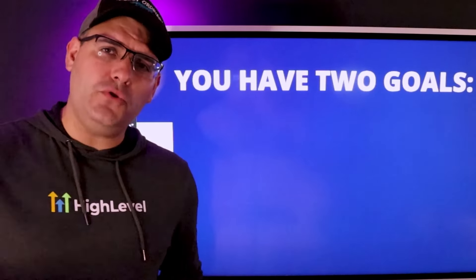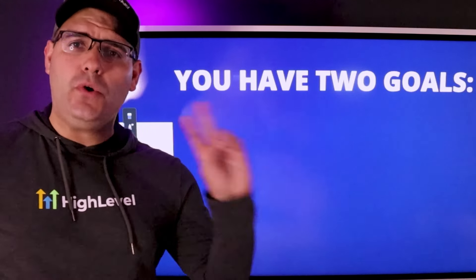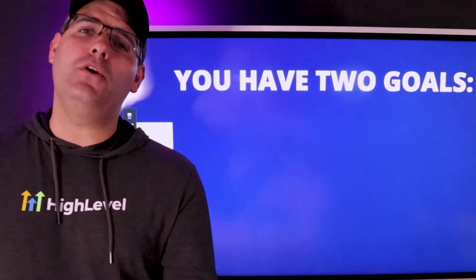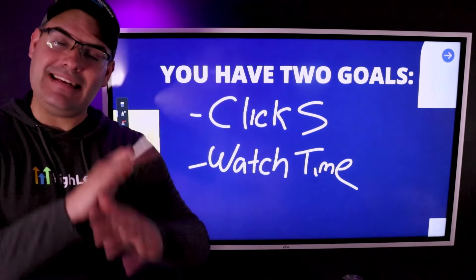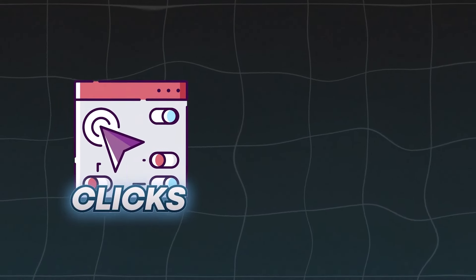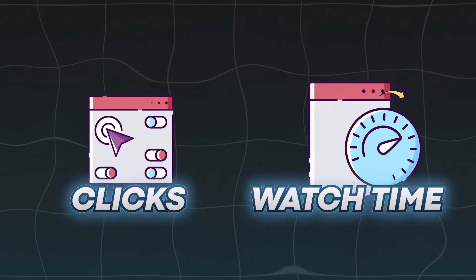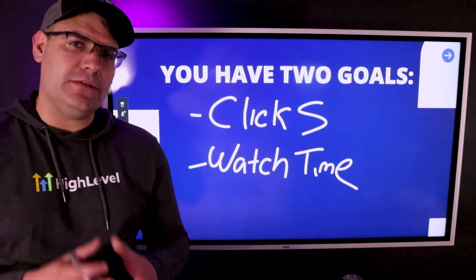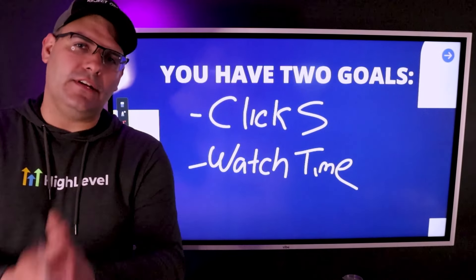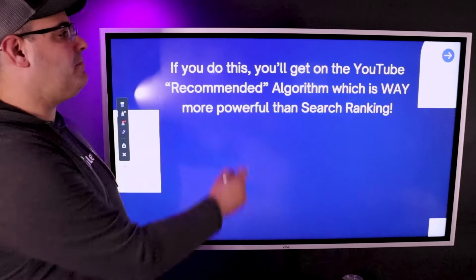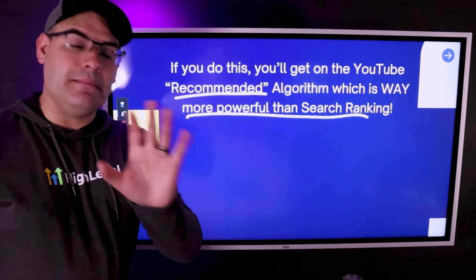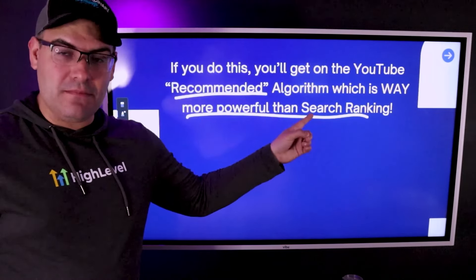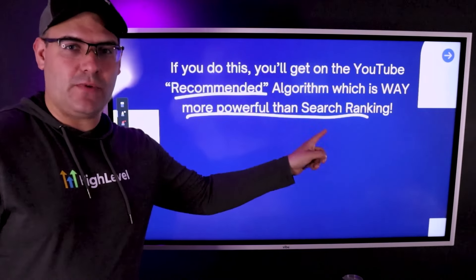When it comes to long form video on YouTube, you only have two goals — and I'm going to make a lot of YouTube coaches mad right now. The only two things that matter are clicks and watch time. You want a thumbnail and title good enough to get somebody to click, and you want to make it relevant enough that it gets them to watch for about five minutes. If you can get these two things, YouTube is going to feed you leads all day long for literally years. The YouTube recommended algorithm is way more powerful than SEO search ranking ever will be.